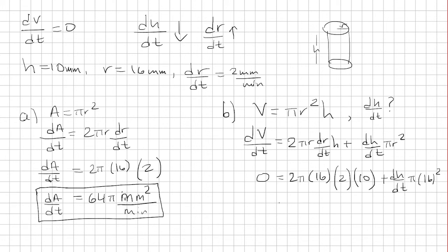Okay, so now we're going to simplify. So we have 0 equals 16 times 2 times 2, that's 16 times 2 is 32, times 2 is 64, times 10 is 640.